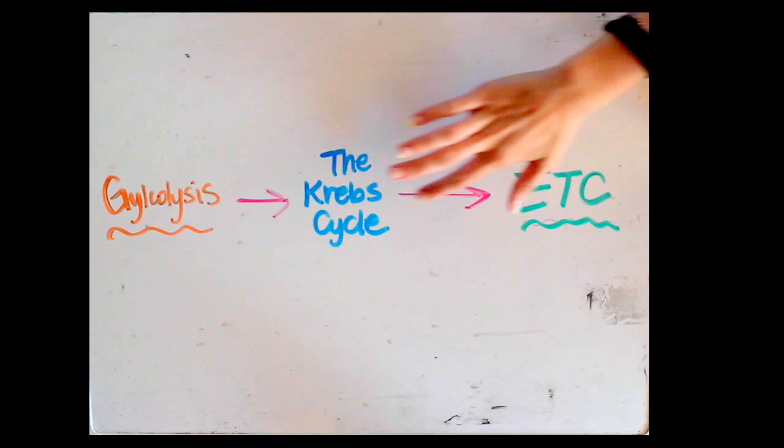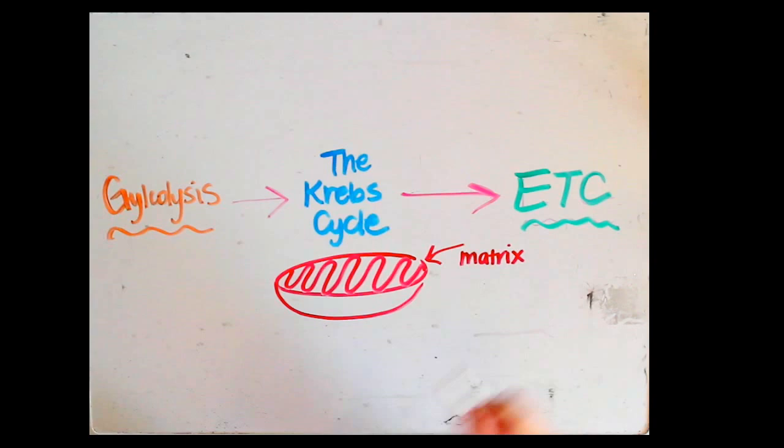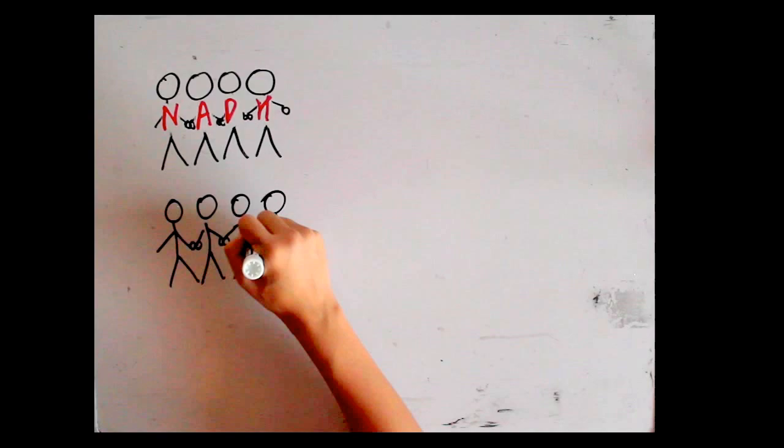For every glucose that is absorbed, the cycle runs 2 times. It follows glycolysis and precedes the ETC. Don't forget it's spinning round and round in the mitochondrial matrix.